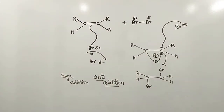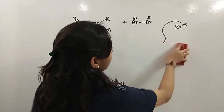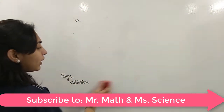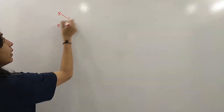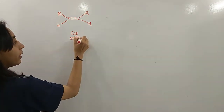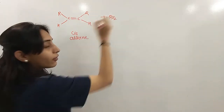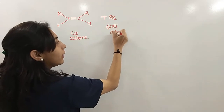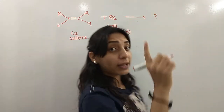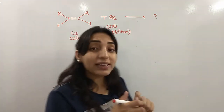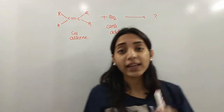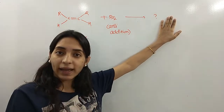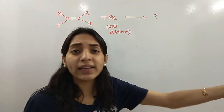If we add halogen to an alkene, the reaction is anti-addition. Now let's see what is asked in the question. He wants us to talk about the optical activity of the product — he is not concerned about the mechanism. He just wants you to tell: is it optically active or inactive? Is it a racemic mixture or a meso compound?